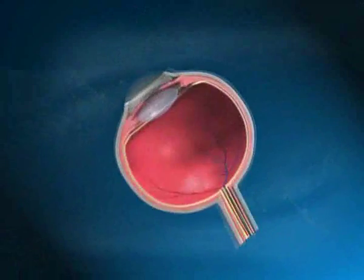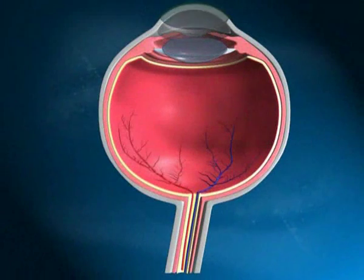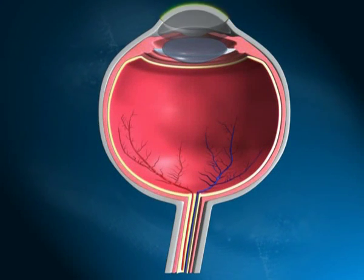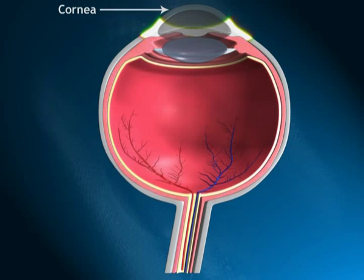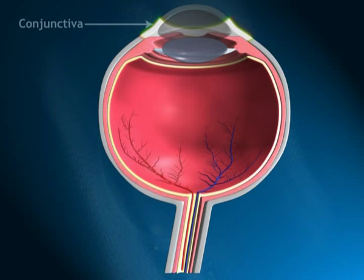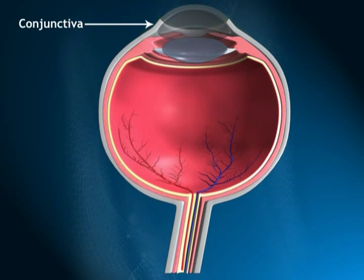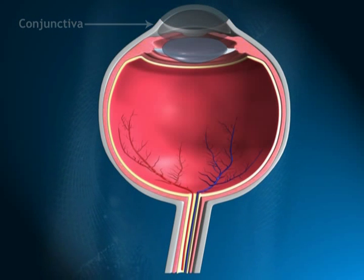Normal vision and glaucoma. The transparent part of the eye located in front is known as the cornea. An extra layer called the conjunctiva also covers the front part of the eye.